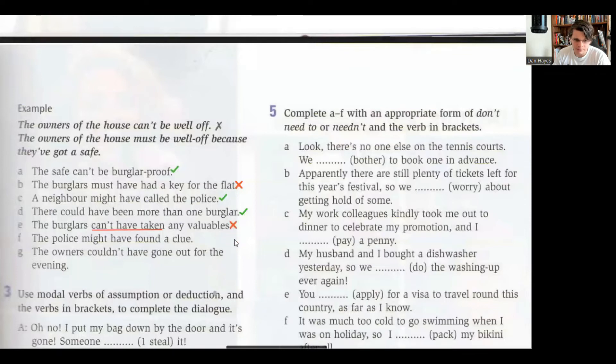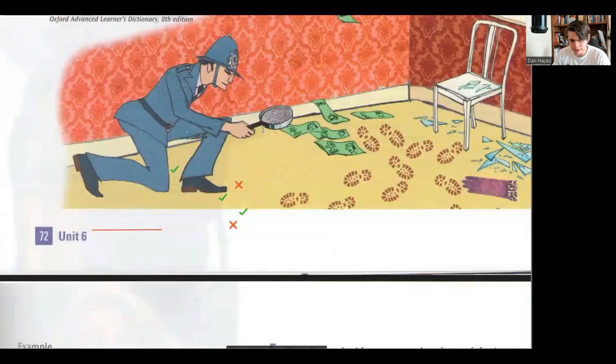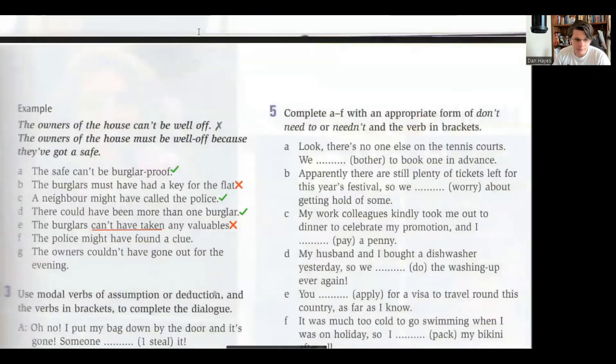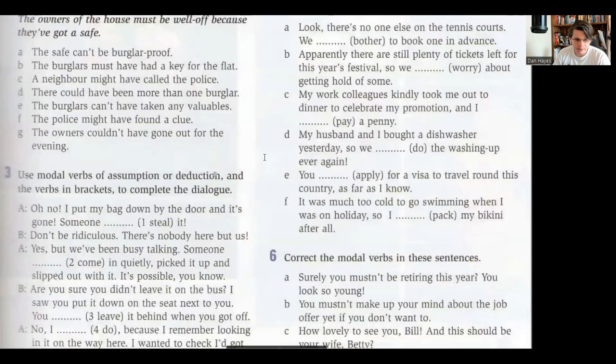The police might have found a clue. Well that seems reasonable because this guy is looking on the floor and he's got his microscope, or his magnifying glass I should say, and he's looking close on the floor here. So I think that's definitely possible that he has found a clue. And the owners couldn't have gone out for the evening - that doesn't seem logical to me because if they were home then they probably would have stopped the burglary.